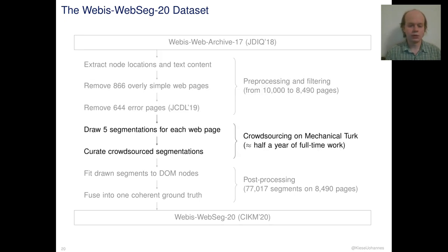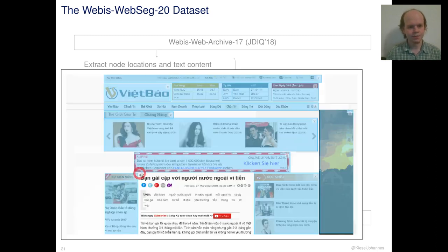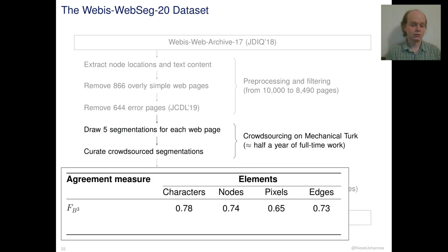Now, following our perception-based concept of a segment, we used crowdsourcing to have five humans segment each webpage. We created results ourselves to assure high quality of segmentations. This screenshot here illustrates the annotation interface, where the annotators were able to track the segments across the screenshots of the webpages.